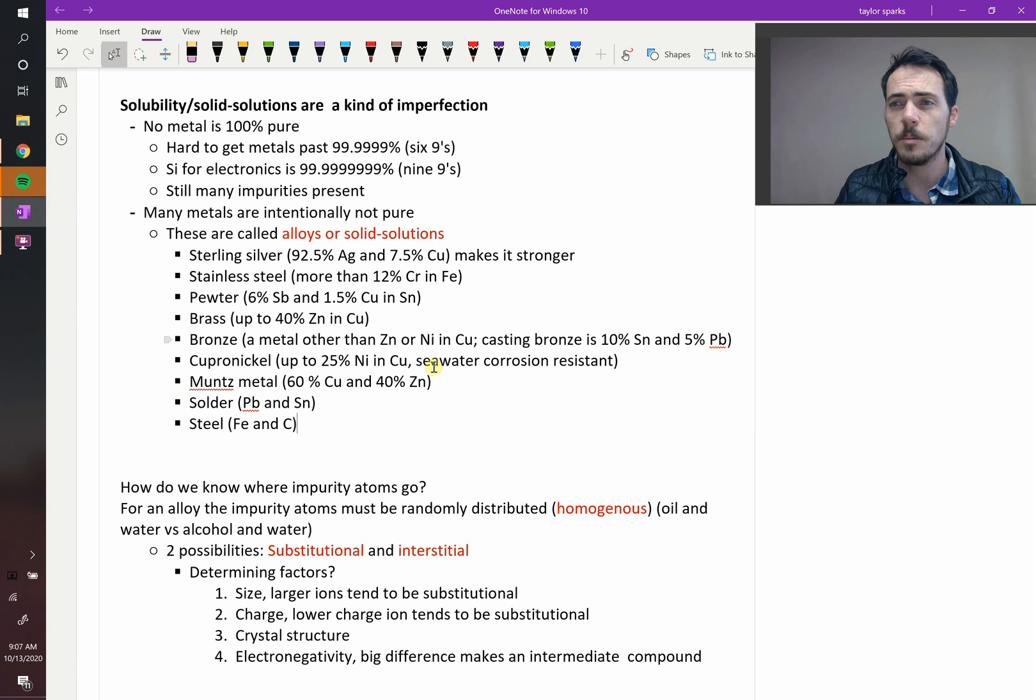And then steel, of course, is a mixture of iron and carbon. So a lot of times, it's wrong to think of metals like, oh, we have to get as pure as possible. Instead, it's right to think of it as, what's the right alloy? And adding such and such an element, what property does that imbue in my material?